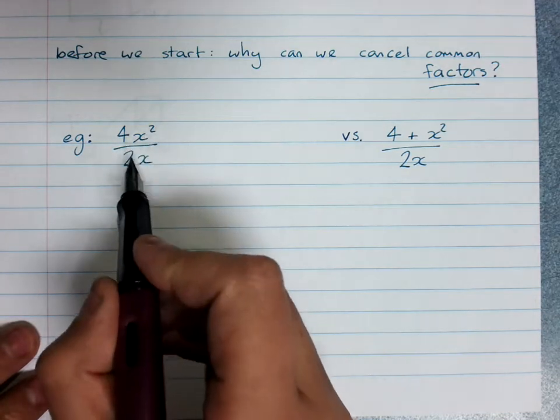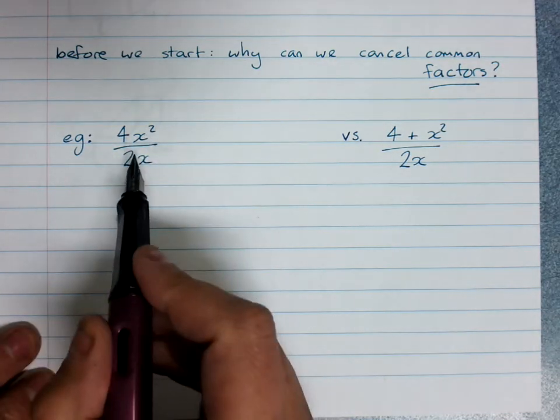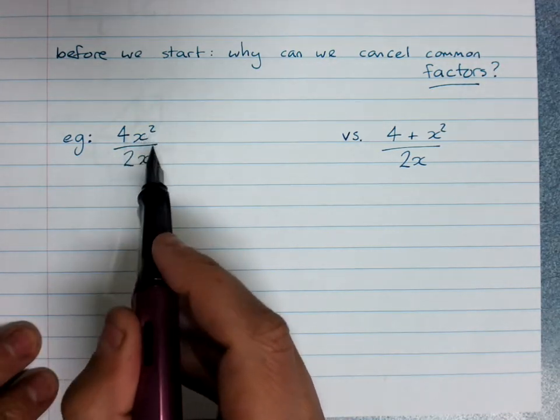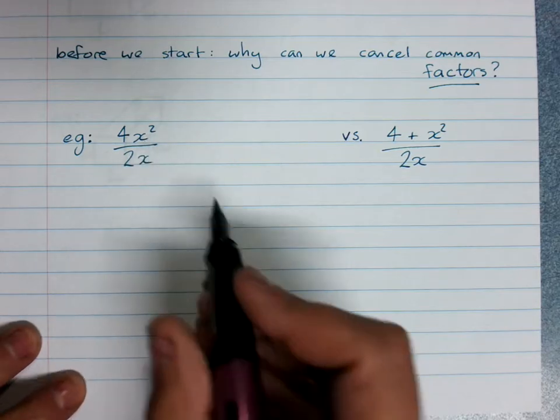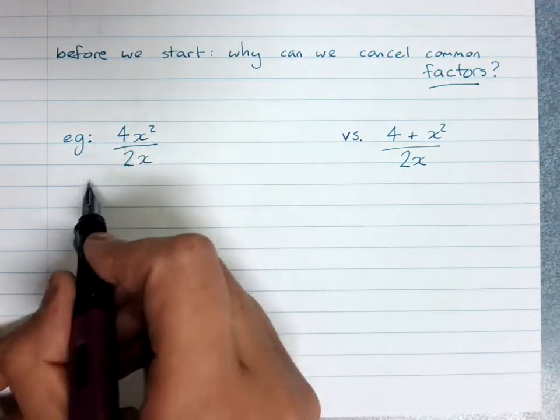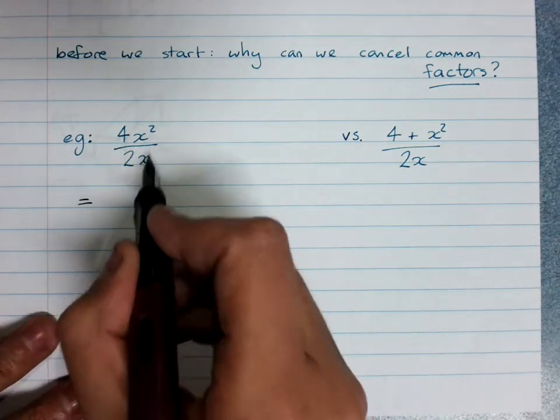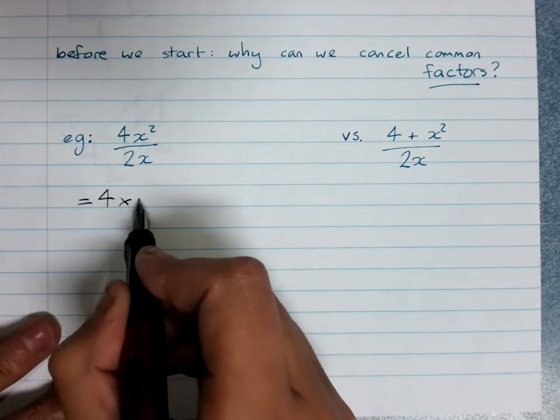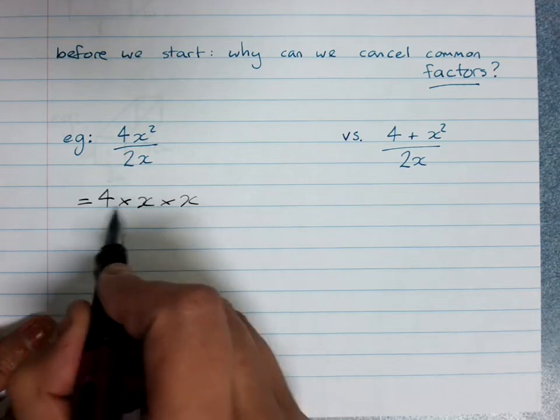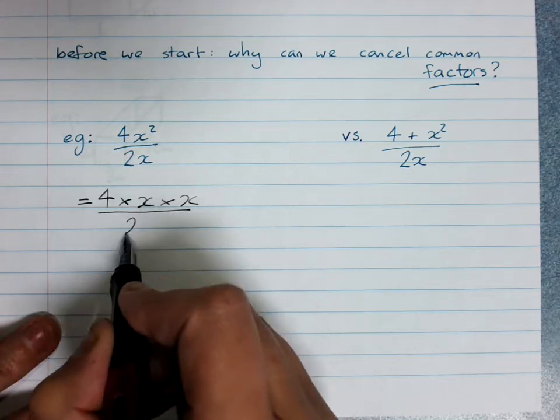So I've got 4x squared over 2x, and you do know that I should be cancelling out the x here. Let's just have a look at what happens when we expand out both of these expressions. I've got 4 times x times x over 2x.